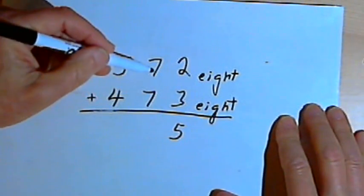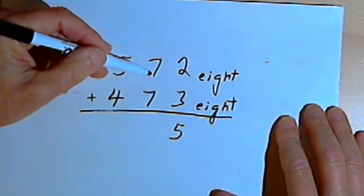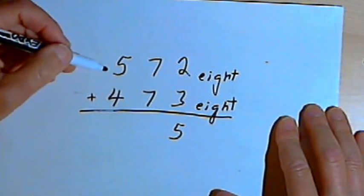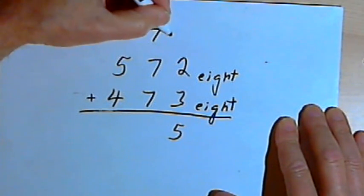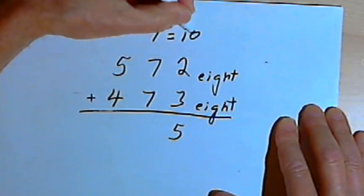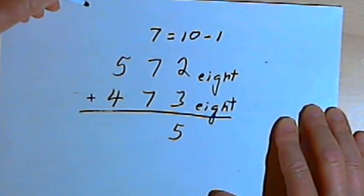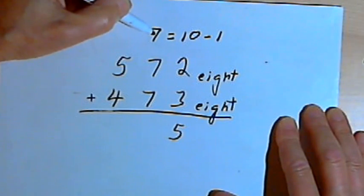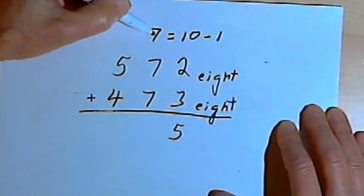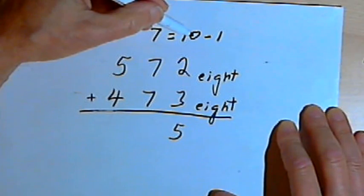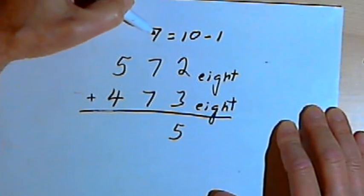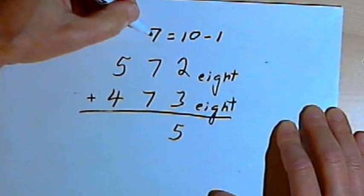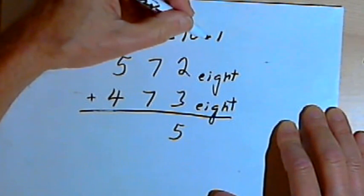Now I've got to add 7 and 7, and I really don't want to bother with all those fingers. So here's a nice trick I've learned. In base 8, 7 would equal 10 minus 1. So think about this. If I counted 1 up from 7, I would get to 10. And then if I took 1 away from that 10, I would get back down to 7. So 7 equals 10 minus 1.